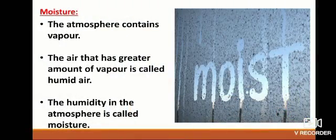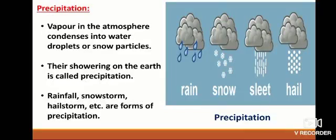Moisture: The atmosphere contains water vapor. Air that has a greater amount of vapor is called humid air. The humidity in the atmosphere is called moisture. The proportion of moisture in the atmosphere depends on temperature — air with higher temperature holds a greater amount of moisture.